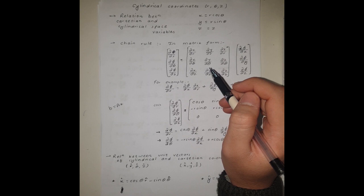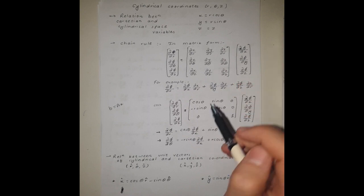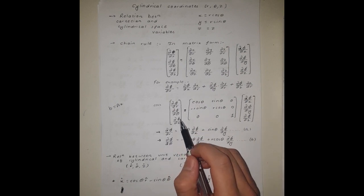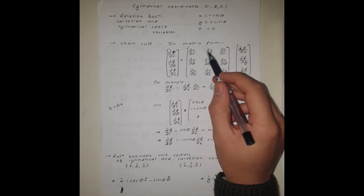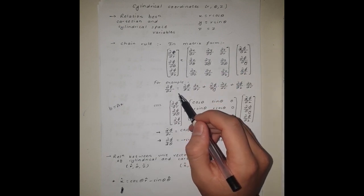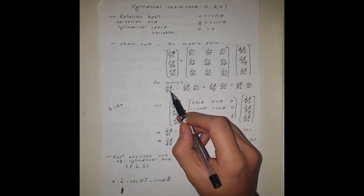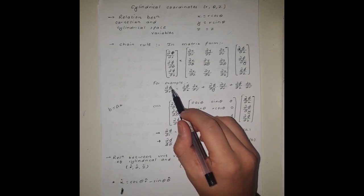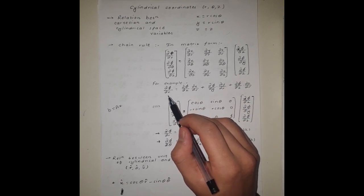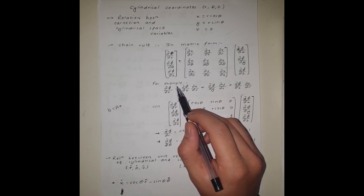To derive the formula we will need to find the relation between the partial derivatives in the Cartesian coordinate system and in the cylindrical coordinate system. For that, I have a matrix form of the chain rule. Using the chain rule, I can find the partial derivative of phi with respect to r, where phi is a scalar field for which all the partial derivatives must exist.